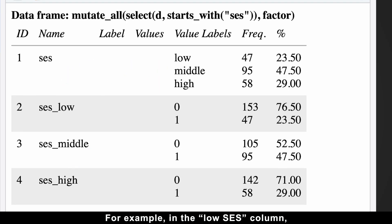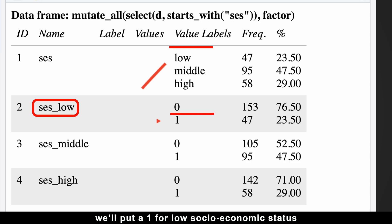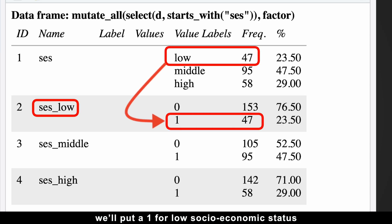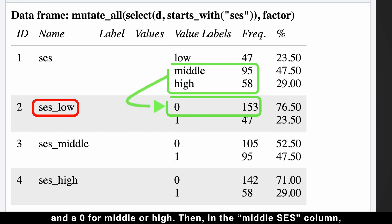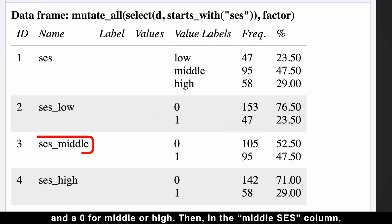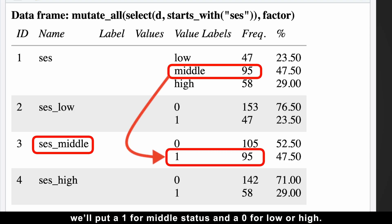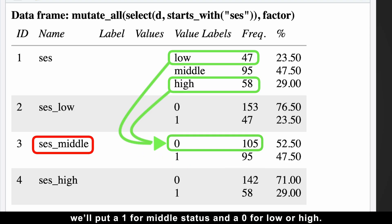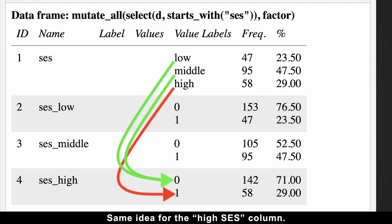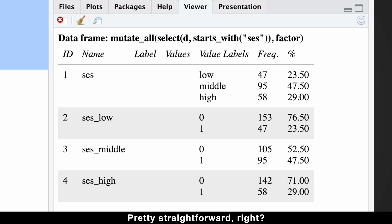For example, in the low socioeconomic status column, we'll put a 1 for low socioeconomic status and a 0 for middle or high. Then in the middle socioeconomic status column, we'll put a 1 for middle status and a 0 for low and high. The same idea applies for the high socioeconomic status column. Pretty straightforward, right?